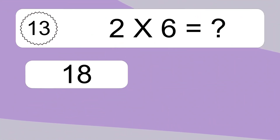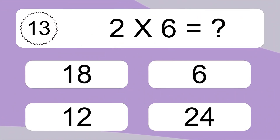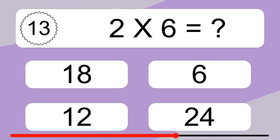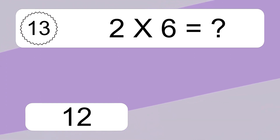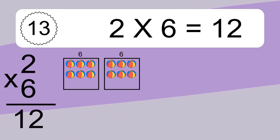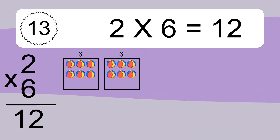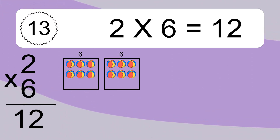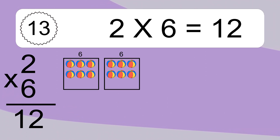2 times 6 equals what? 2 times 6 equals 12. We have 2 boxes, and each box has 6 colorful balls inside. If you count all the balls in all the boxes together, you will have 2 times 6 balls. This equals 12 balls.